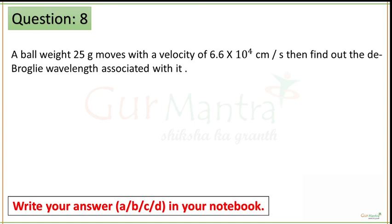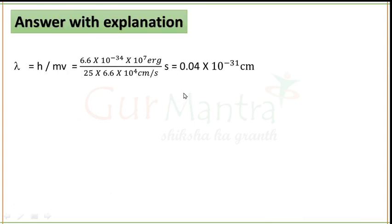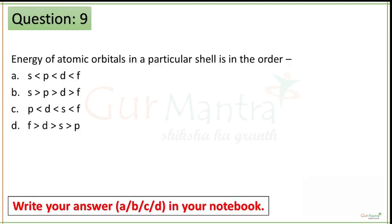Time up guys. You have been given the mass of the object and the velocity, and you have to find the de Broglie wavelength associated with it. As you know, λ = h/mv. When you put all the values into this equation, you will get the answer as 0.04×10⁻³¹ centimeters. Question number 9 — you have to tell the energy of these orbitals, your time starts now.